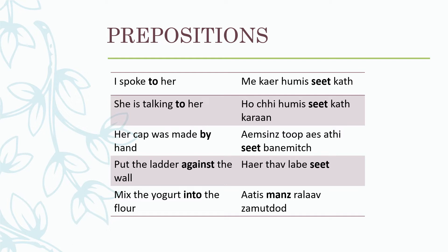She is talking to her: mekar hume syidh khatr karin. Her cap was made by hand: imsun stoop is athu syidh banyemats. Syidh over here is 'by'. Hand is 'athu', imsun means her, toop is cap, and banyemats is made.